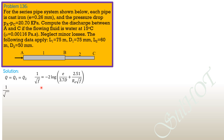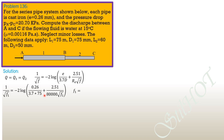For pipe 1: 1 over square root of F1 equals negative 2 log of quantity (0.26 over 3.7 times 75) plus (2.51 over 80,000 times square root of F1). Using a calculator, F1 equals 0.02873.